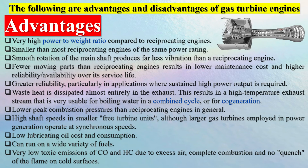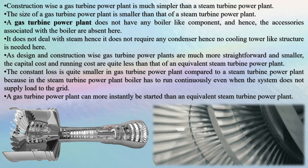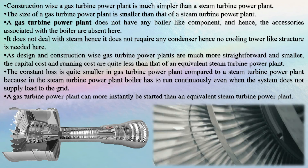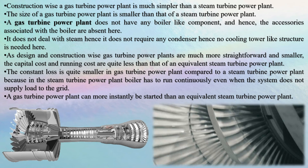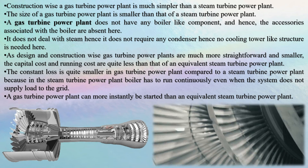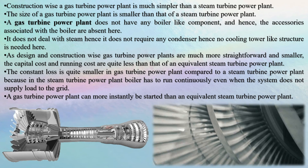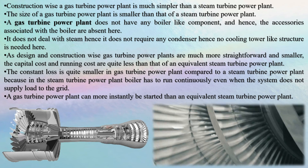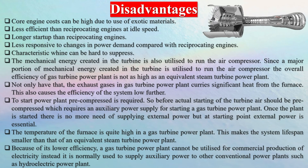Disadvantages include: core engine costs can be high due to use of exotic materials; less efficient than reciprocating engines at idle speed; longer startup time; less responsive to changes in power demand; characteristic whine can be hard to suppress; and a major portion of mechanical energy created in the turbine is used to run the air compressor, reducing overall efficiency. Additionally, exhaust gases carry significant heat from the furnace, further lowering system efficiency.